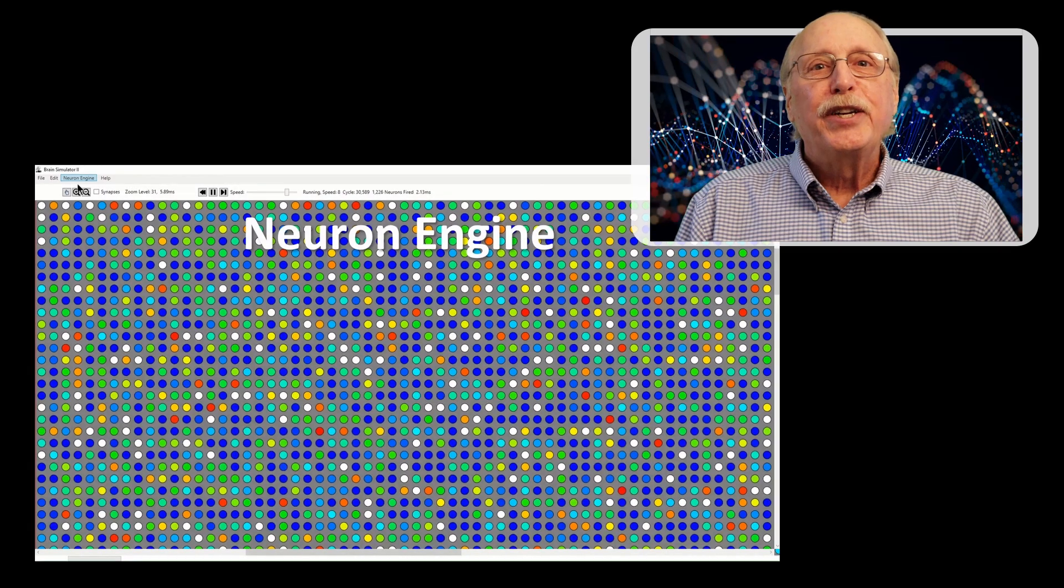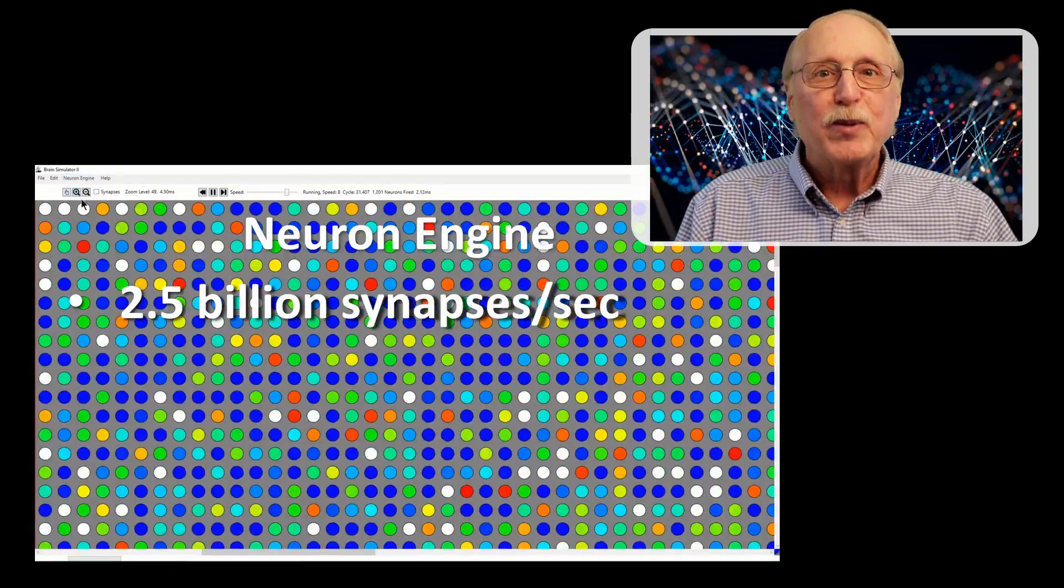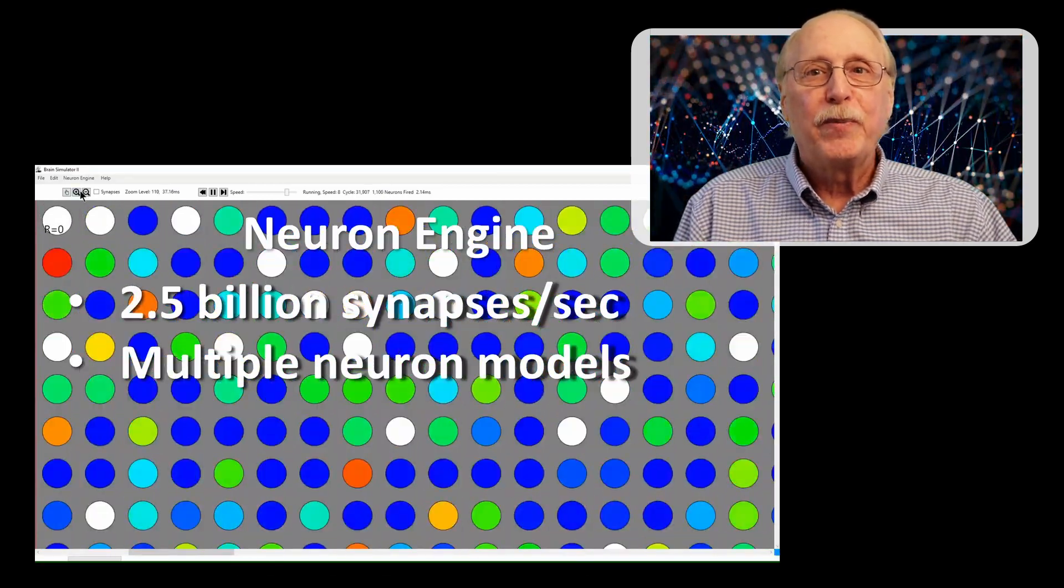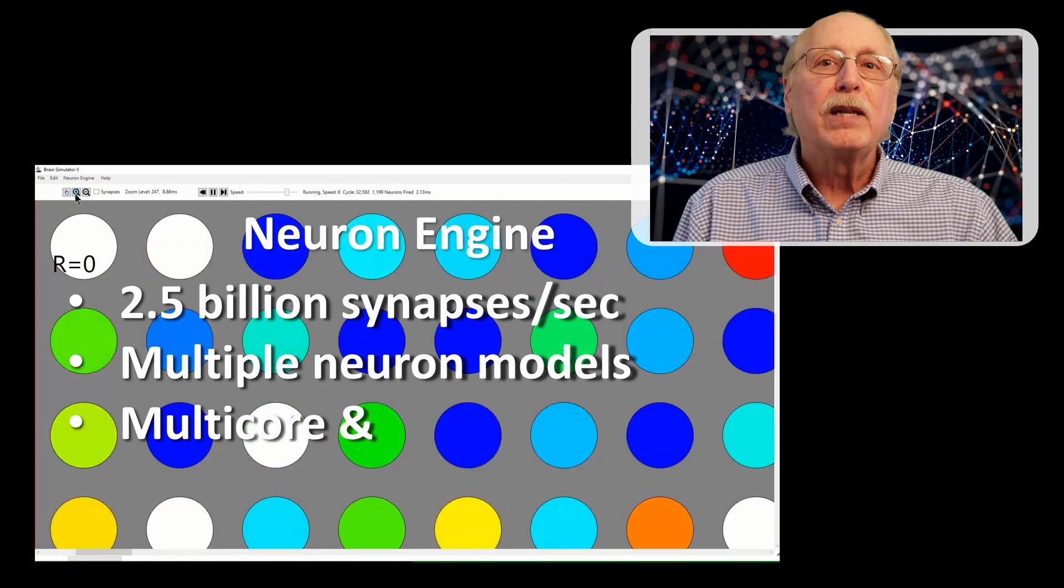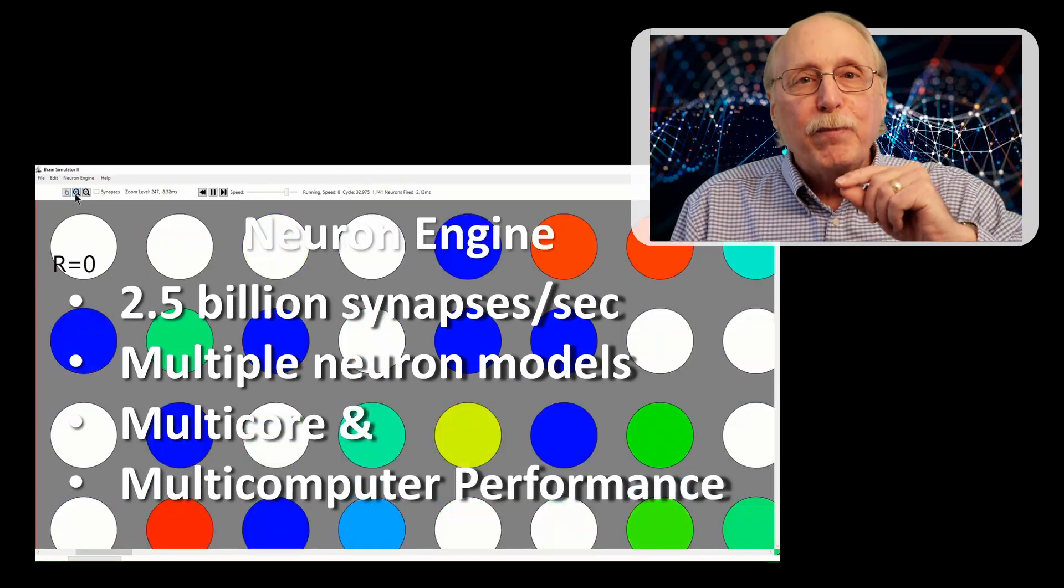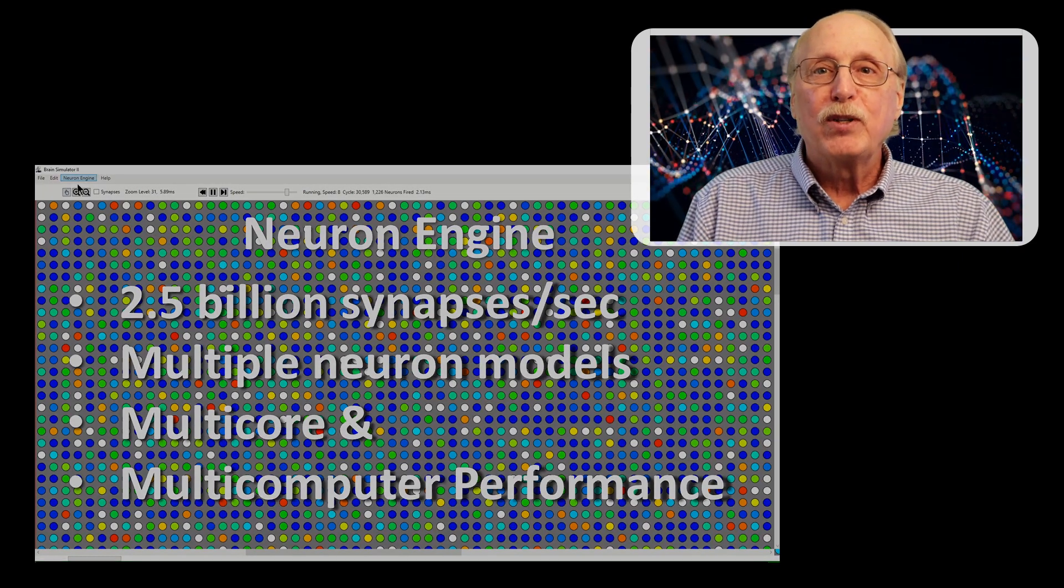The powerful neuron engine is fast, clocked at two and a half billion synapses per second on a powerful desktop CPU. The neuron engine supports multiple spiking neuron models and it operates in parallel on multi-core computers and is extensible across machine clusters.